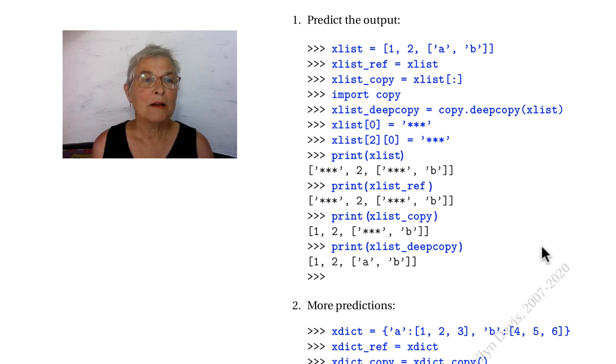Welcome back. So here we have an xList, and it is a list with a list inside. I'm going to make what I call a reference. When I say xList_ref equals xList, then xList_ref is another identifier on the very same piece of memory.